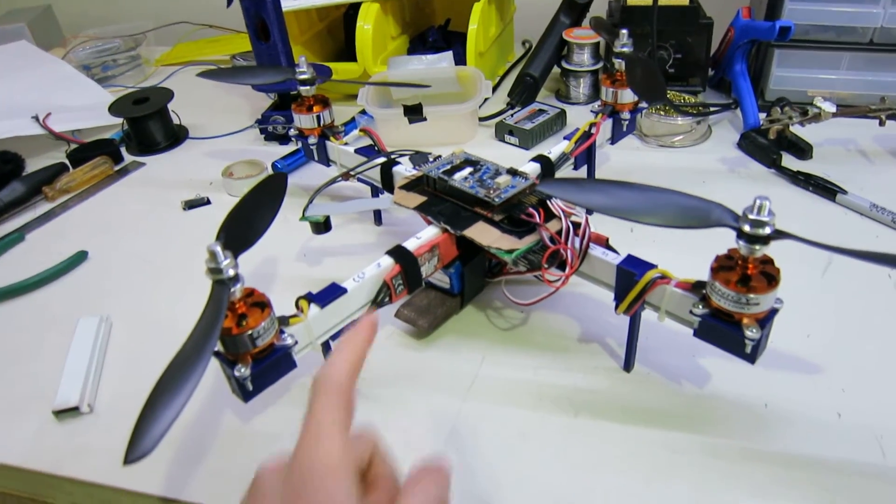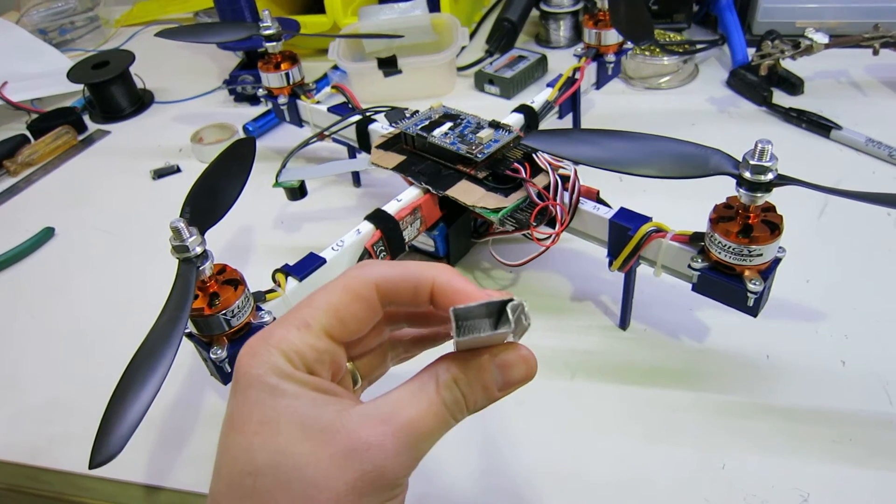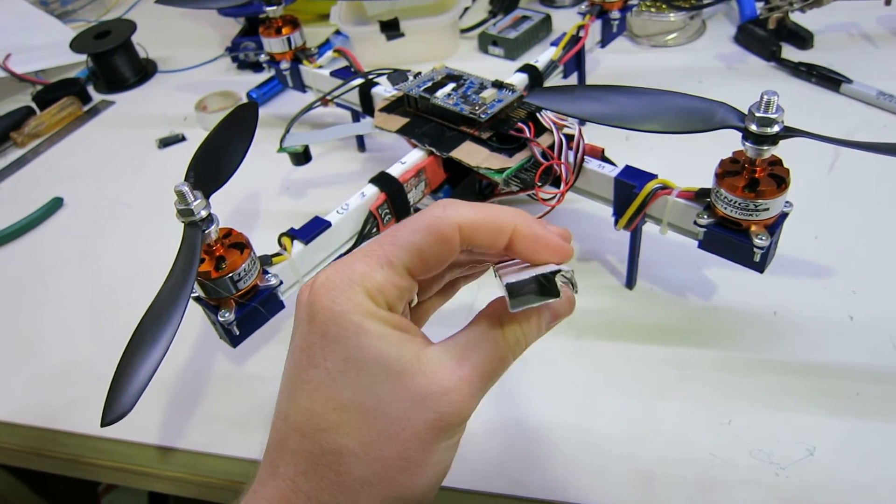This is my 3D printed quadcopter. The arms are made out of this aluminum rectangular profile bar used for fly screens.